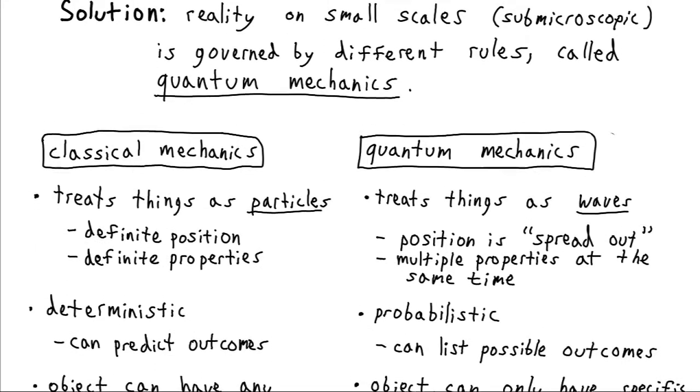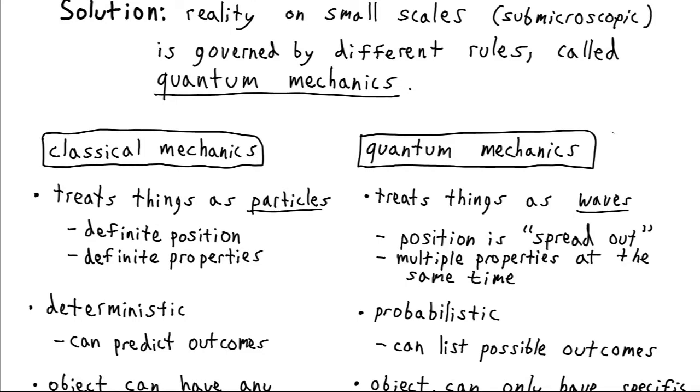Well, classical mechanics, it's deterministic. If you know all the initial conditions of your system and the rules that govern it, you can predict exactly what's going to happen. For example, firing a cannonball, you can predict its exact trajectory.